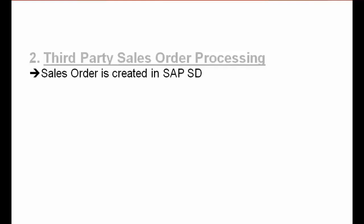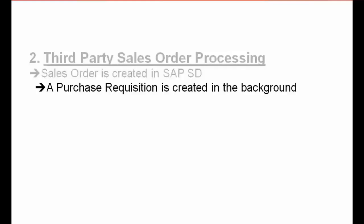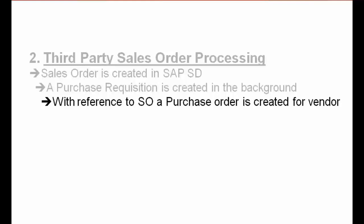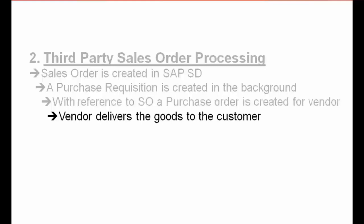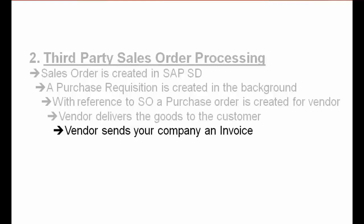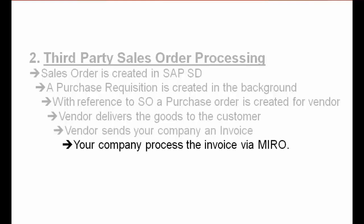The vendor is charging us, and we are charging the customer. Here are the steps: first, a sales order is created in SAP SD. Second, a purchase requisition is created automatically in the background because of the SD sales order. Third, with reference to the sales order, a purchase order is created for the vendor. The vendor delivers goods directly to the customer and sends my company an invoice, which we process via the MIRO transaction. Finally, we bill the customer directly from the SAP SD side.